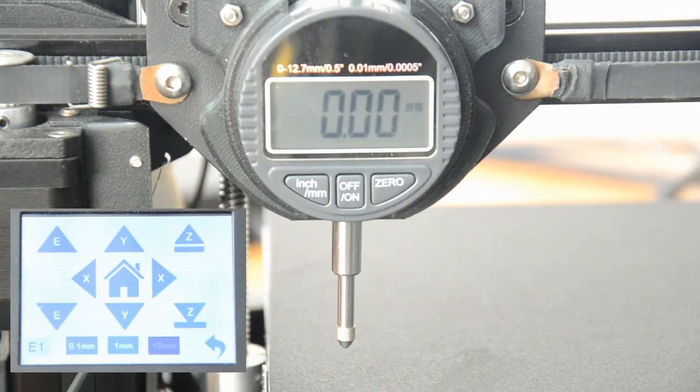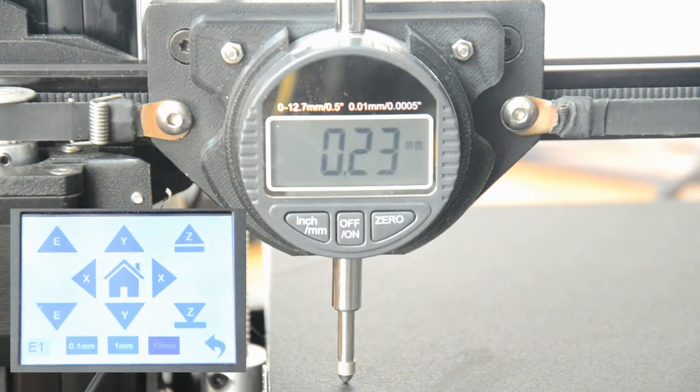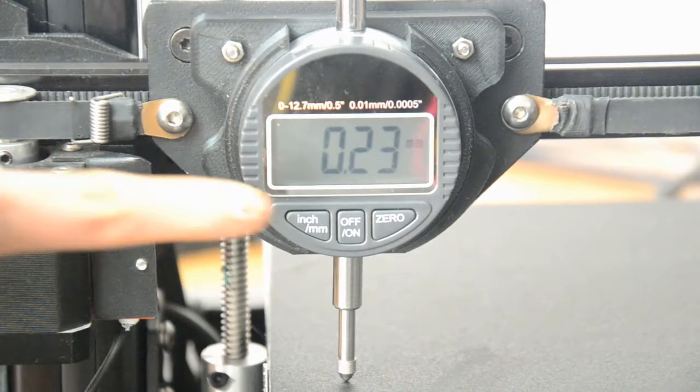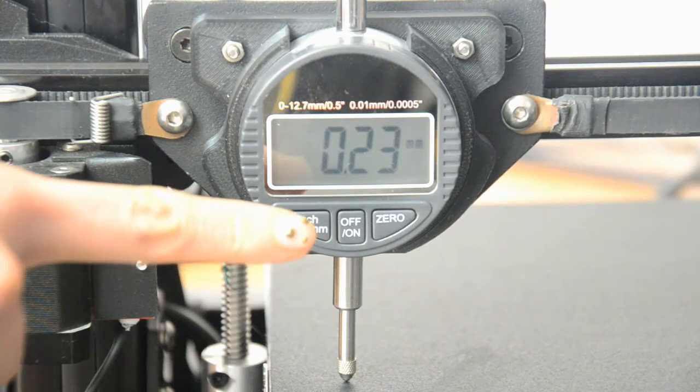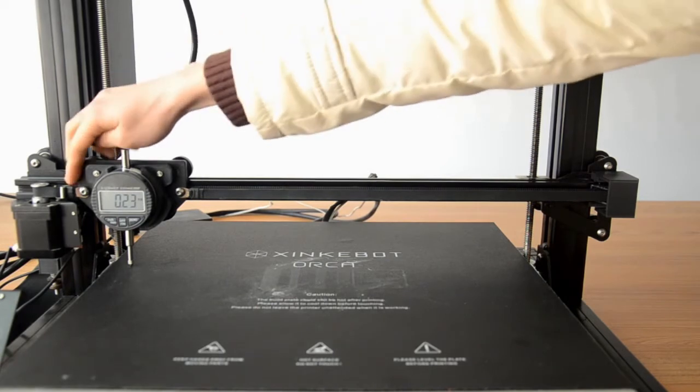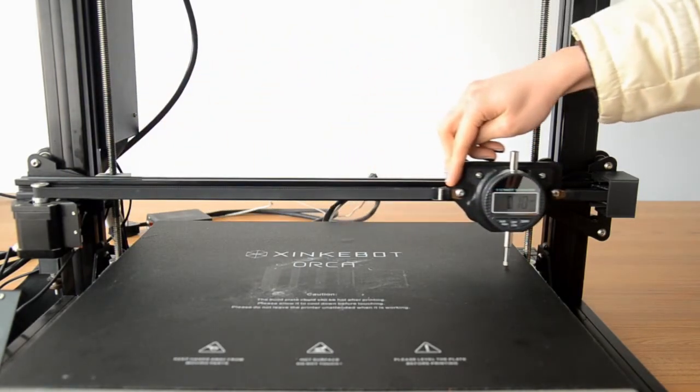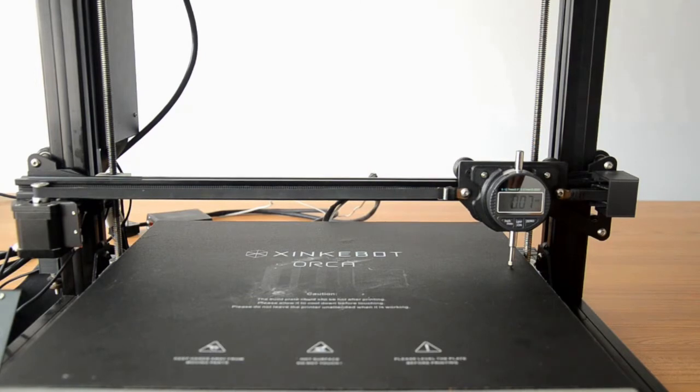Lower the z-axis until there is a reading on the dial indicator. Now it's 0.23mm. Move it to the right side. Now you can see the reading is 0.07mm, which means the right side is lower than the left side.